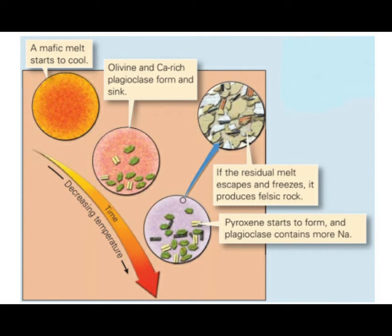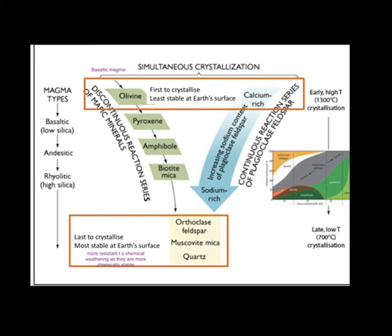Bowen thought that fractional crystallization plays a major role in the differentiation of magma and the formation of various kinds of rock from one particular magma type. After his experiments, he proposed a series showing the sequence in which minerals crystallize from a basaltic magma. In this Y-shaped diagram, the left-hand side is called the discontinuous reaction series and the right-hand side is called the continuous reaction series.